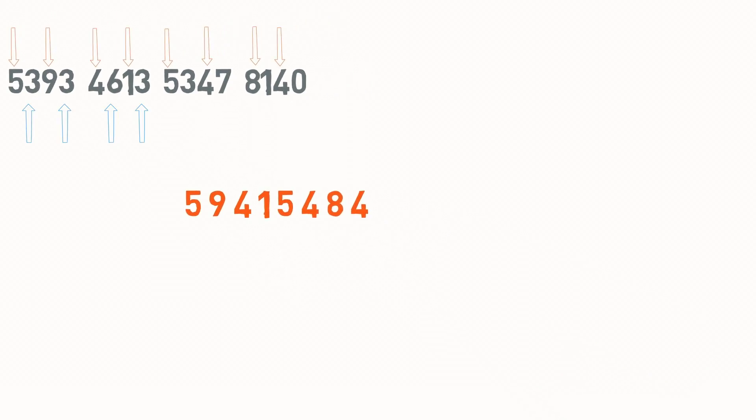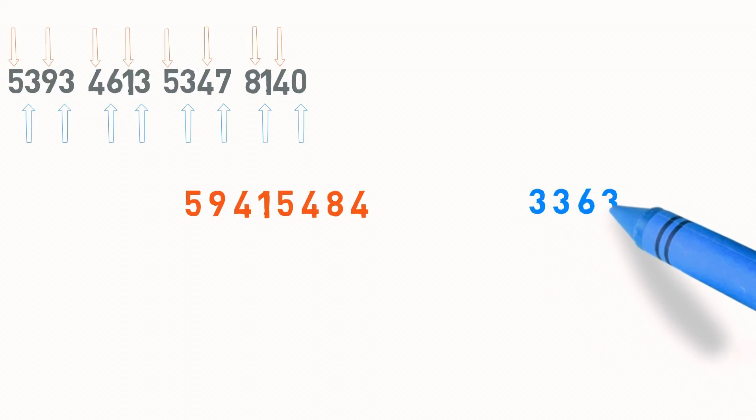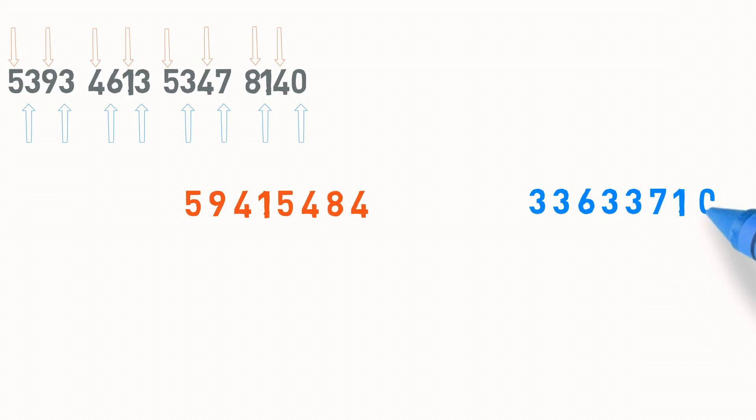And then I will write down the even-positioned digits here like so: 3, 3, 6, 3, 3, 7, 1, and 0.